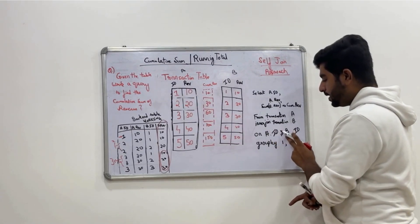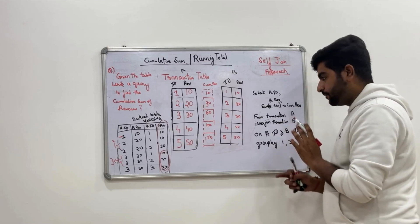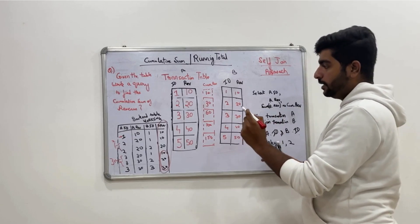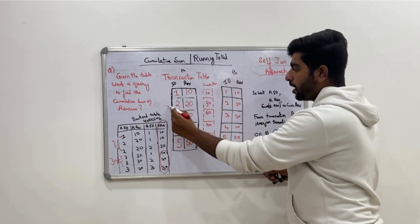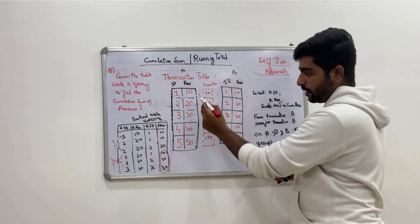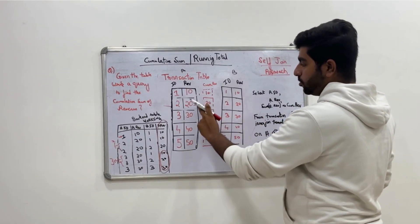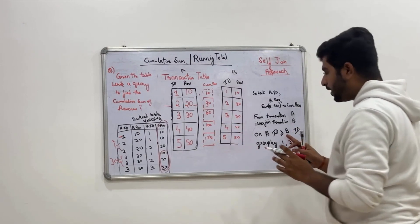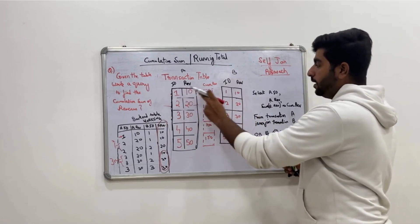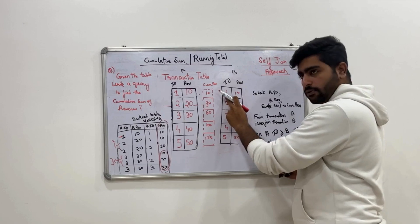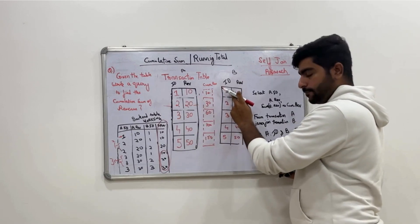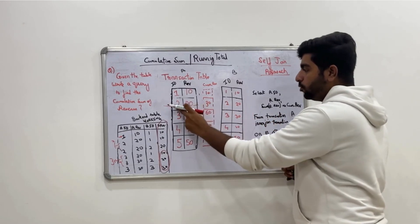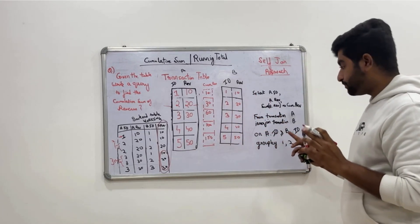The only concept you need to think about is the join condition. The condition is A.id should be greater than or equal to B.id — that's it. Why greater than or equal to? Because cumulative sum means it is the summation of the current row along with all previous rows. Had it been just greater than, then id=2 from A would not have joined with id=2 from B. So 1 needs to join with 1, 2 needs to join with both 1 and 2 — therefore greater than or equal to.